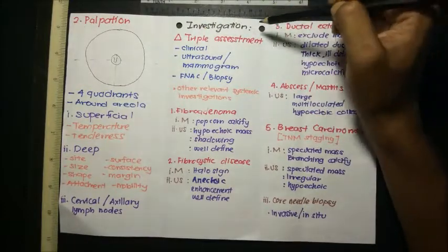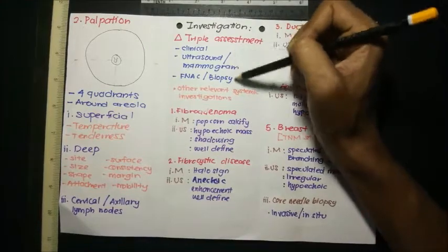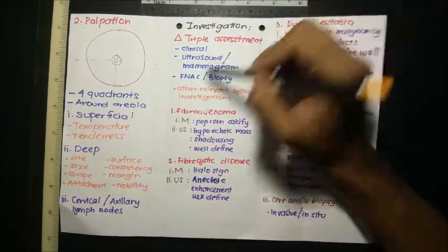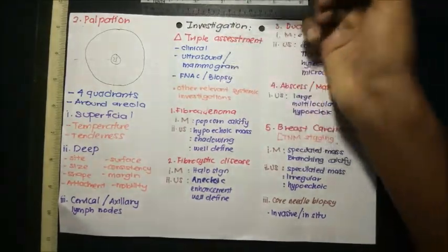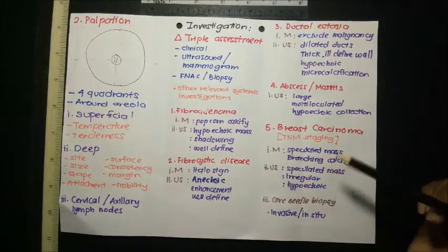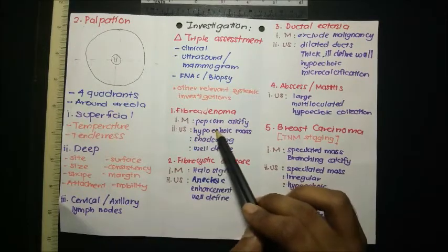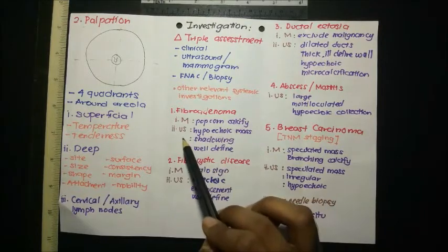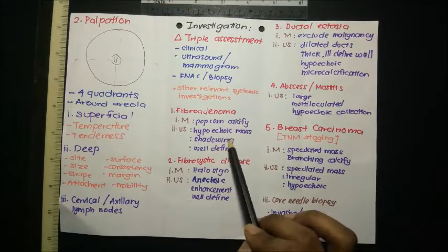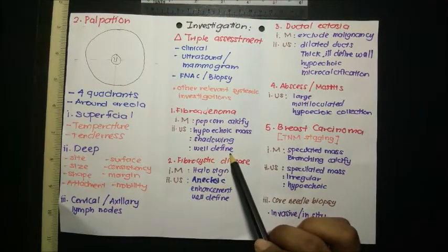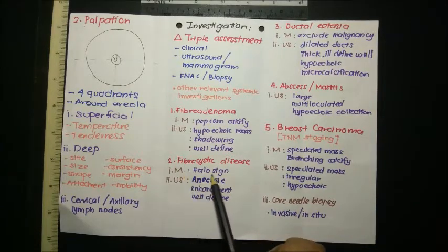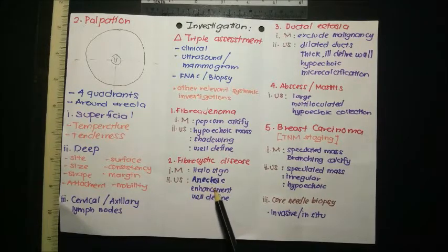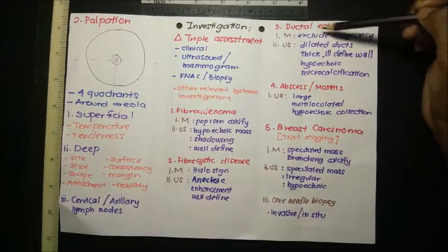For investigations, every breast swelling needs the triple assessment: clinical examination, ultrasound or mammogram, and FNAC or biopsy. For fibroadenoma, mammogram shows popcorn calcification; ultrasound shows a hypoechoic mass with posterior shadowing and well-defined margins. For fibrocystic disease, mammogram shows a halo sign; ultrasound shows an anechoic mass with acoustic enhancement due to fluid inside, and well-defined margins.